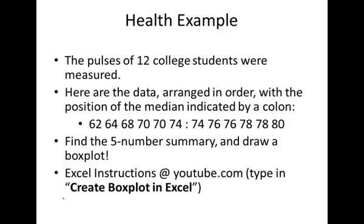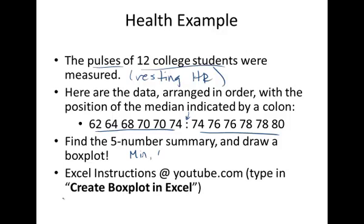So here's a good example for you to practice with your TI calculator. 12 college students and we're measuring their pulse. So this is beats per minute. Maybe it's resting heart rate. So with these numbers, by the way, this is indicating where the median is. So hopefully you can figure that out. Figure out what the minimum, Q1, Q2, Q3, and the maximum are. And then draw a box plot based on that. By the way, if you YouTube or Google create box plot in Excel, you should be able to find YouTube videos also for using Excel. That's what you like to use.